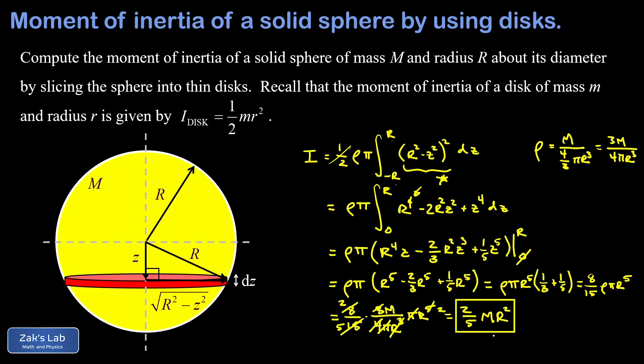So just thinking about units for a moment. The units of moment of inertia should always be kilogram meters squared. And we see that in here with our mass multiplied by radius squared. And we've got our familiar formula for the moment of inertia of a solid ball rotating about one of its diameters. Two fifths m r squared.